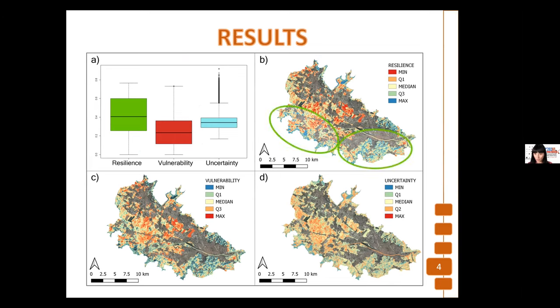The resilience of ecosystem services are concentrated in the south and southwestern part of the study area, meanwhile the vulnerability is located in the central part and the north of the study areas. Finally, the uncertainty is absent in the resilient ecosystem services, and more present in the vulnerability of the areas.